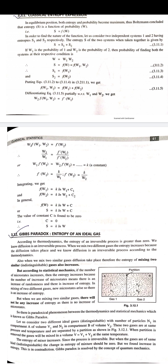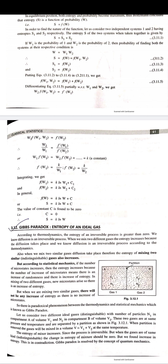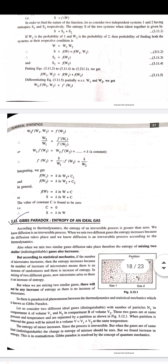S equals F of W, which is F of W1 times W2. S1 equals F of W1 and S2 equals F of W2. Now the entropy expression is S equals S1 plus S2. In terms of the thermodynamic probability function, F of W1 times W2 equals F of W1 plus F of W2.